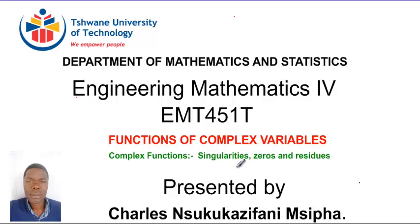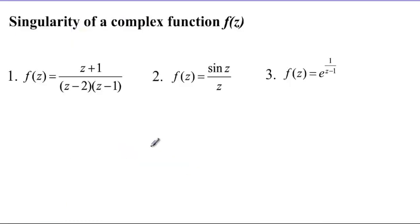Now, starting with singularities, a singularity of a complex function f(z) is a point z equals z0 on the complex plane where f(z) fails to be analytic.